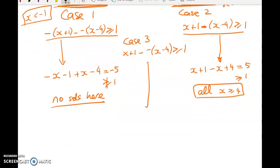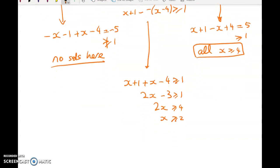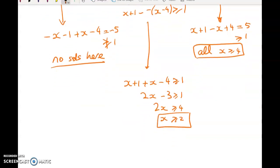And then case 3 is my crossover. And I have x + 1 + (x - 4) is greater than or equal to 1. So 2x - 3 is greater than or equal to 1. 2x is bigger than 4. x is bigger than 2. So when we put all of this together, my solution set is simply x greater than or equal to 2.